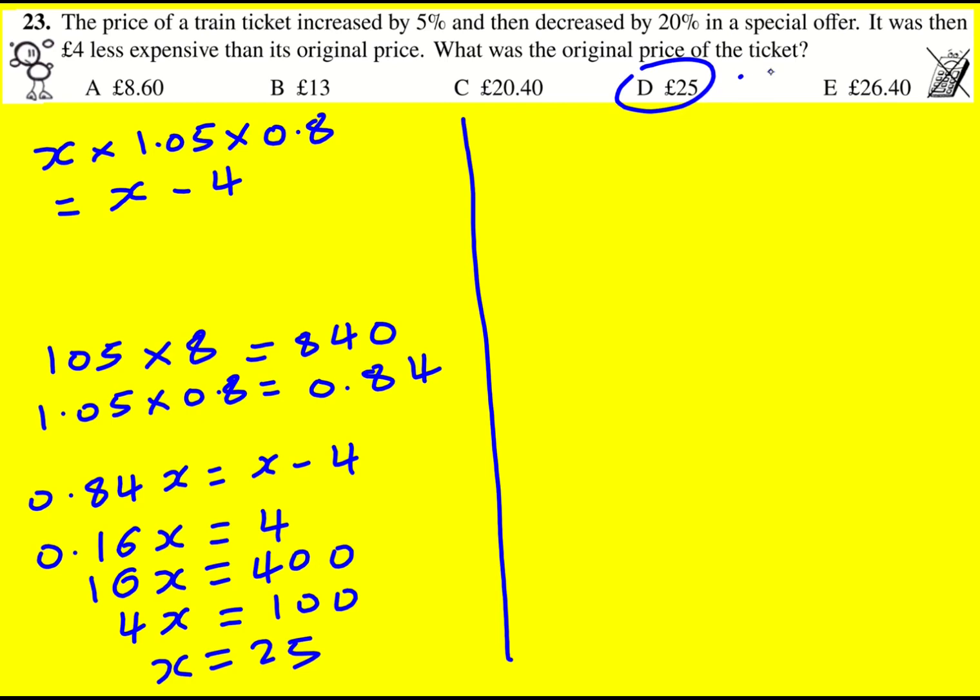Okay, so the answer's D and I've used the multiplier route. If you're not familiar with that route, you can still do this question.